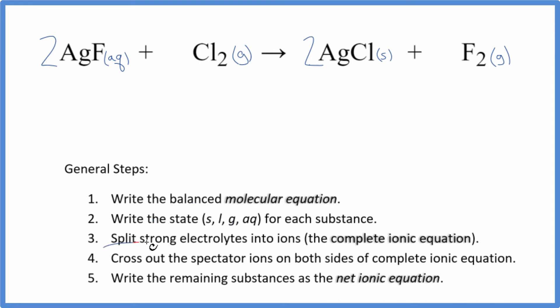Now we can split the strong electrolytes into their ions. So I'm assuming here that we're bubbling Cl2 through AgF. And because of that, we'll split this up into the ions.